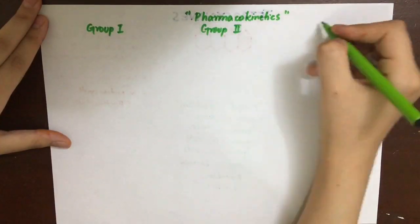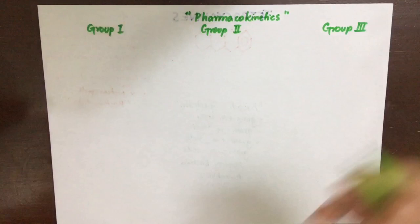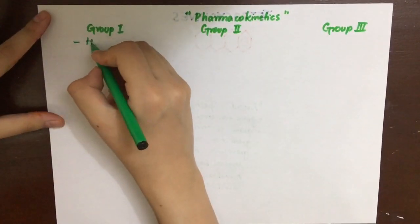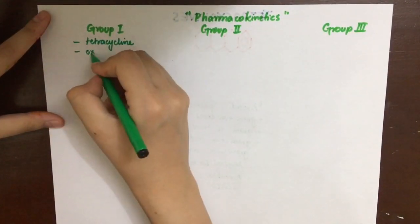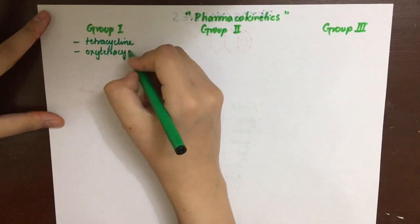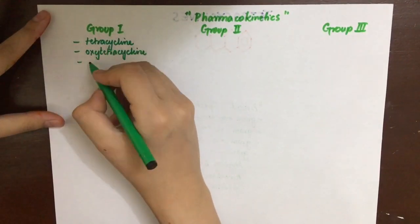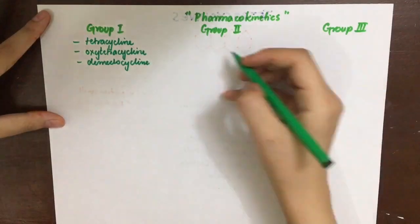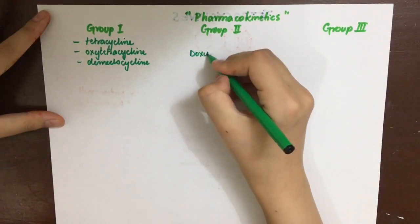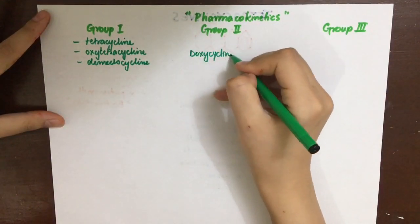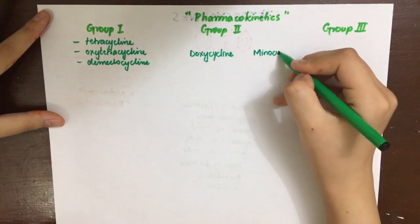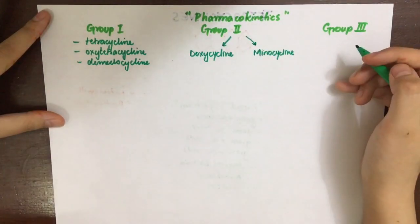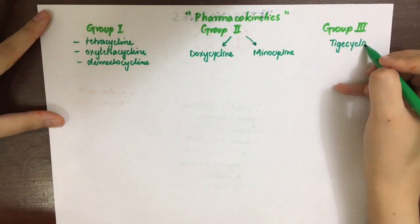To make their pharmacokinetics easy to remember, we'll divide them into three groups. Group 1 includes tetracycline, oxytetracycline, and demeclocycline. Group 2 includes doxycycline and minocycline. Group 3 includes tigecycline, which is actually a glycylcycline derivative.